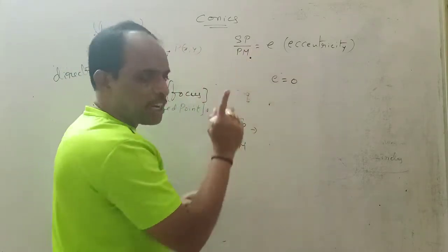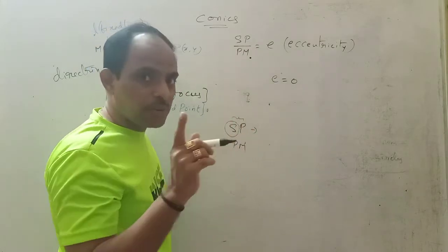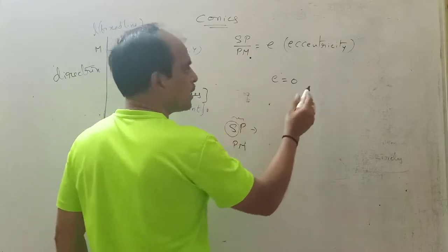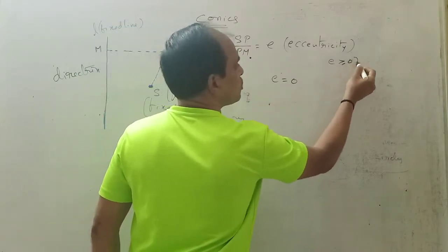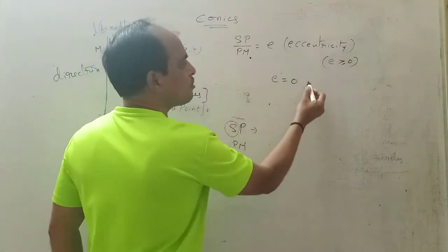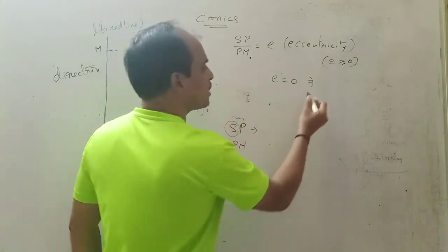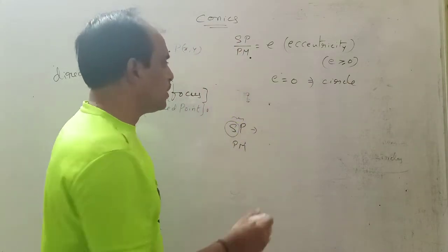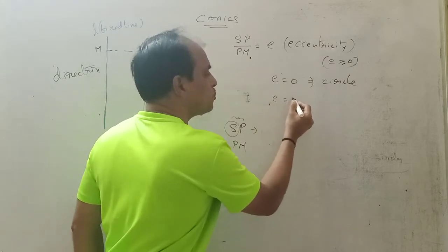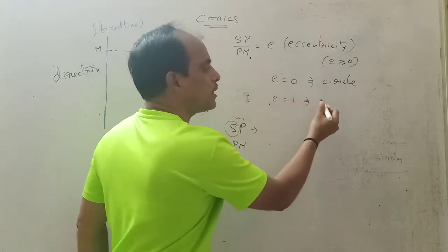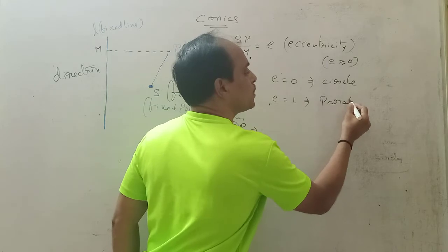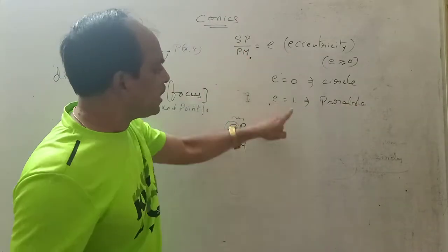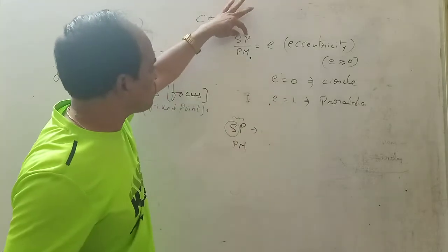The ratio SP/PM is called eccentricity, denoted by e. Note that eccentricity cannot be negative since both SP and PM are distances, so e ≥ 0. If e = 0, the conic is a circle. If e = 1, the conic is a parabola, which means SP = PM — the two distances are equal.